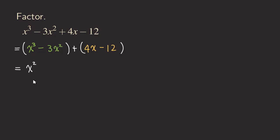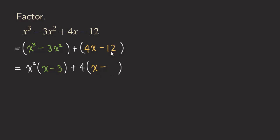So we get X squared and then we are going to get X minus three. That's our first term, and then there is a plus. Now let's look at the second group. We also want to pull out the GCF here. There is a four and a 12, so the GCF would be four. We pull out the four, and then four times something gives us four X, so we have X, and then four times negative something gives us negative 12, so that must be negative three.